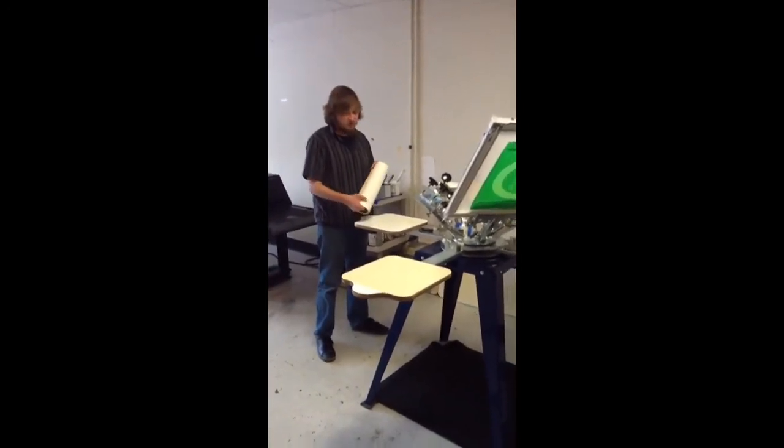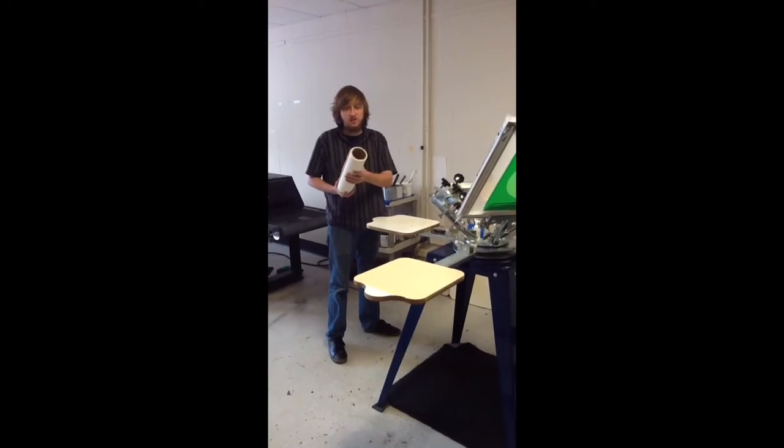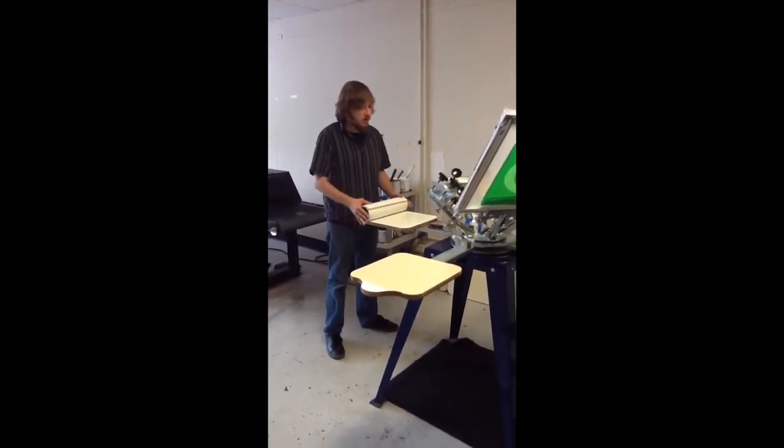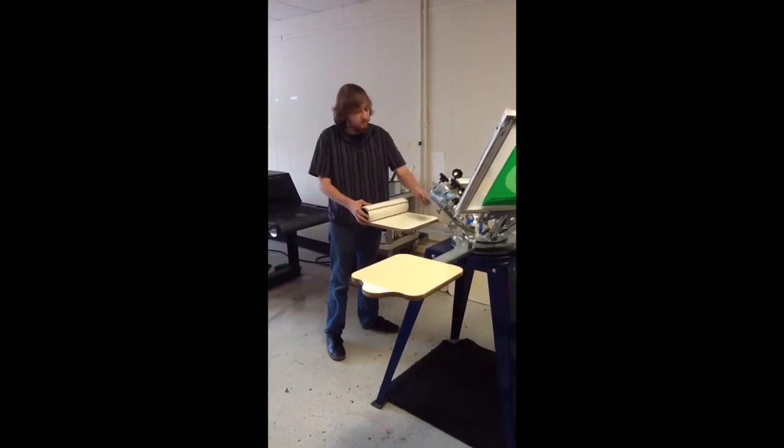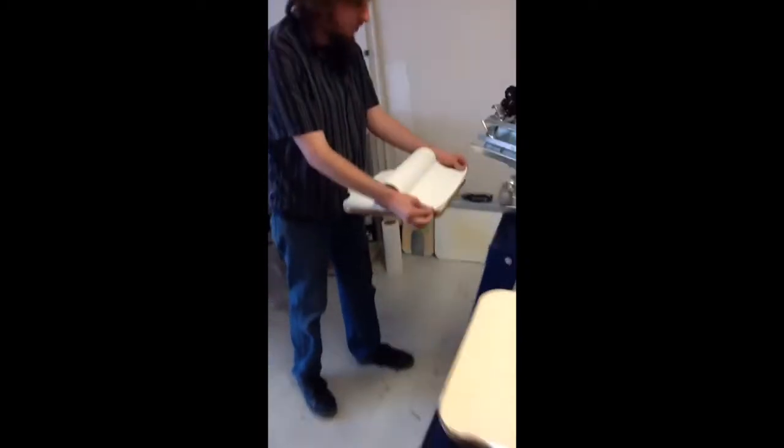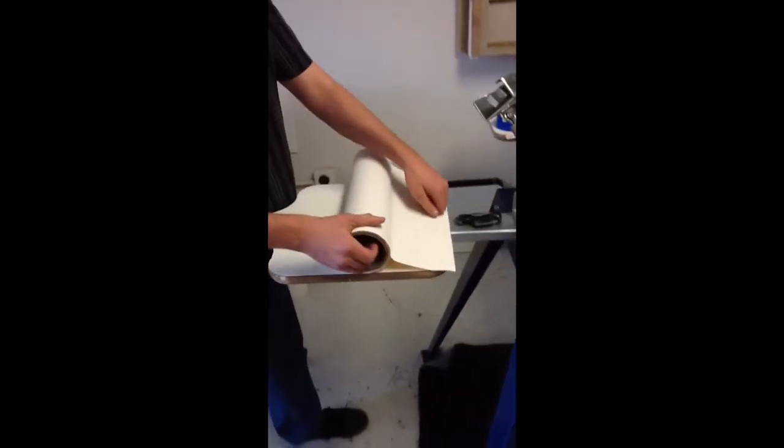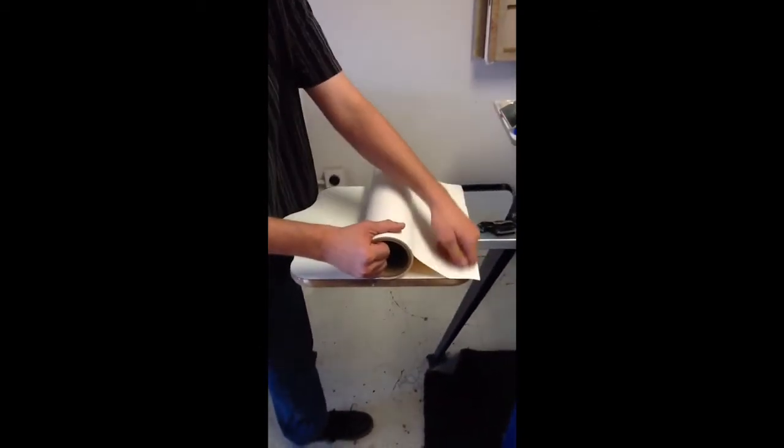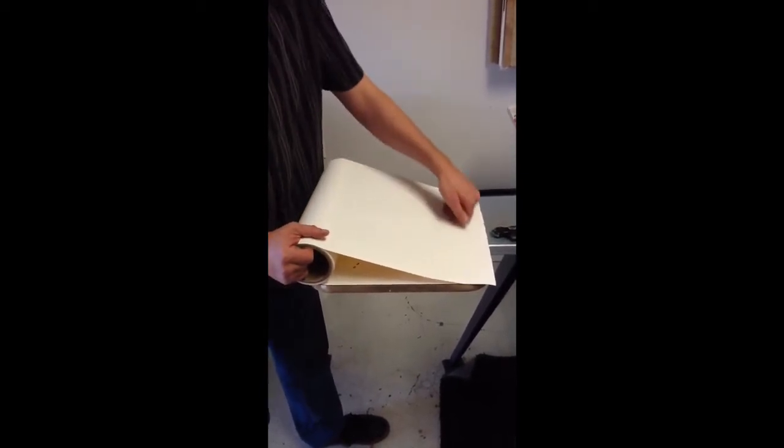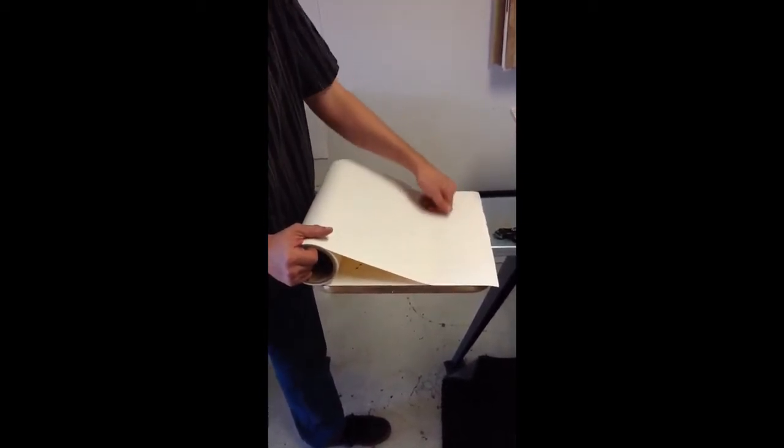Alright, so for this we'll just need our double-sided platen tape with the paper coating to protect it and a knife to cut it. A very important rule to follow when you're applying this to your pallet is that you don't want any air bubbles because that will show up on your print.